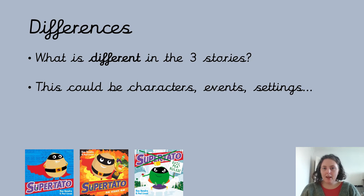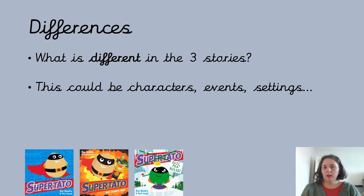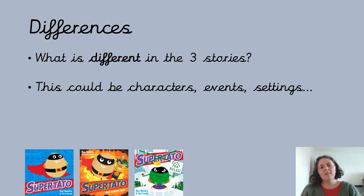Now you've thought about similarities and things that are the same, we're going to talk about differences. So what is different in the three stories? This could be characters which are different — maybe we've got some characters which don't appear in some of the stories, or only in one of them. Maybe there is an event that happens that only happens in one story, or a setting that's only in one of the stories. So think about what is different in each of the three books, and again you might want to pause the video and have a chat with someone about what's different.